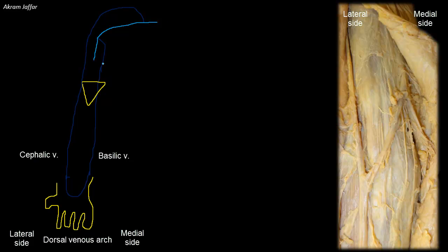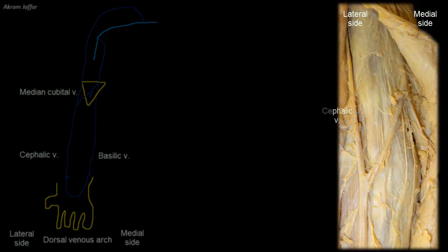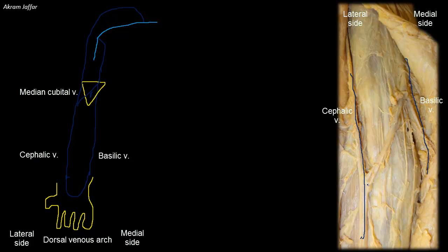The axillary vein continues as the subclavian vein. The two superficial veins — cephalic and basilic — are joined by a median cubital vein over the cubital fossa. This median cubital vein carries much of the blood from the cephalic vein to the basilic vein. It has a deep communication with the deep veins in the fossa, but the vein itself passes in the roof of the cubital fossa. Here we can see the cephalic vein on the lateral side, the basilic vein on the medial side, and the median cubital vein as the communication between them.